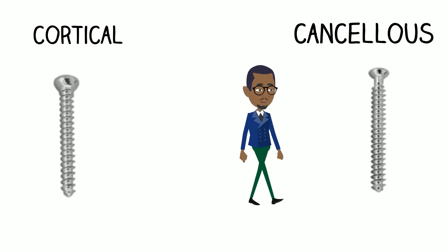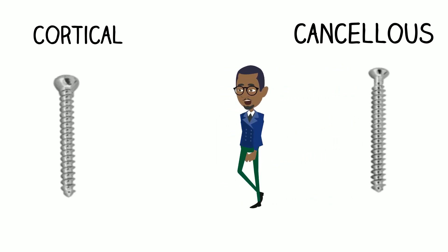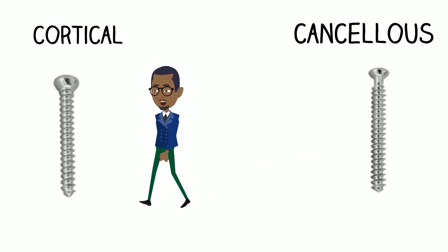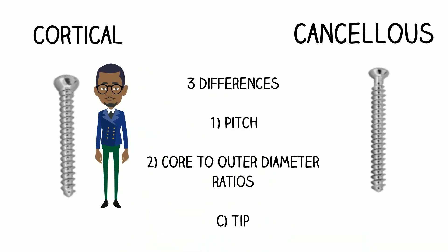Cancellous screws have a larger pitch and cortical screws have a smaller pitch. There are three differences: pitch, ratio of core diameter to outer diameter, and tip.